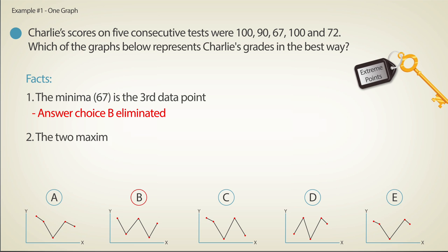We have two maximal points, the first and the fourth. Graphs A and E only have one maximal value, thus they too can be eliminated. Graph D's maximal value is the second point, and not the first, which means that we can eliminate it as well.